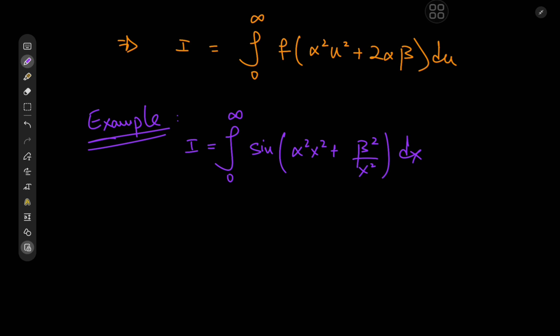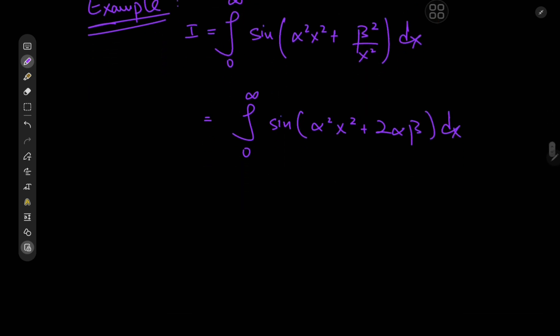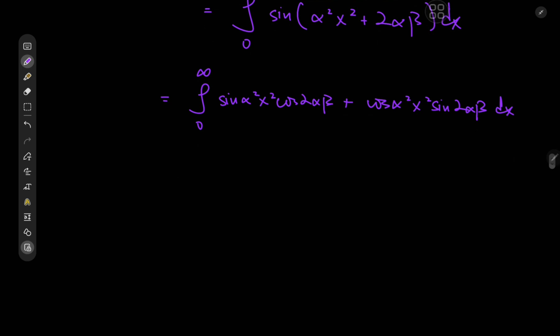Let's apply this result to the menacing-looking integral that resembles a mutated version of the Fresnel integral: the integral from 0 to infinity of sine of alpha squared x squared plus beta squared divided by x squared. We know this should equal the integral from 0 to infinity of sine of alpha squared x squared plus 2 alpha beta dx. Expanding using sine of a plus b, we have the integral from 0 to infinity of sine of alpha squared x squared times cosine of 2 alpha beta plus cosine of alpha squared x squared times sine of 2 alpha beta dx — giving us a couple of integrals to evaluate.